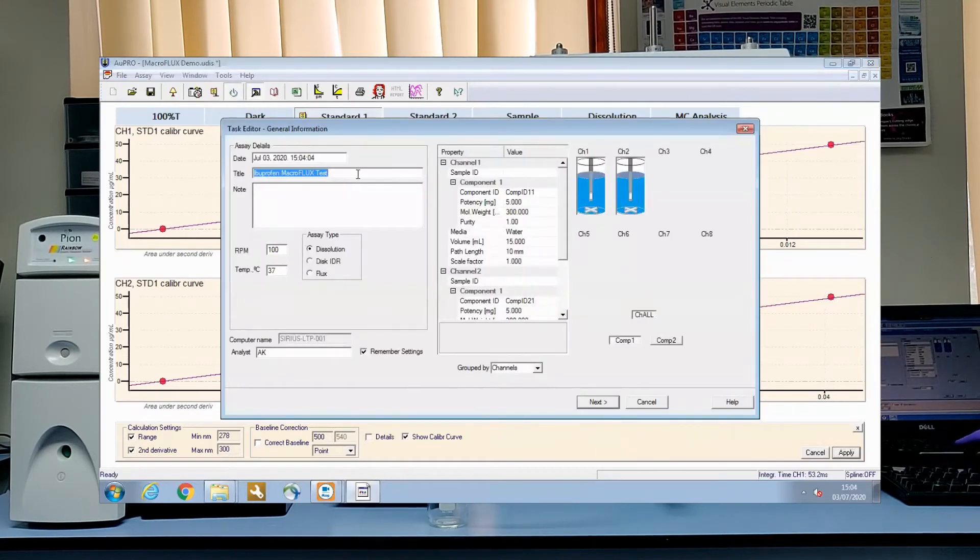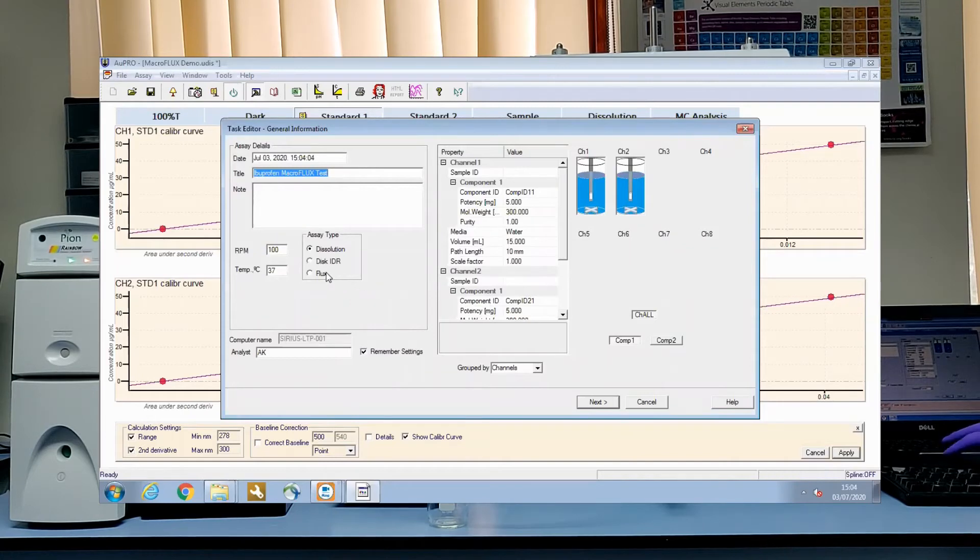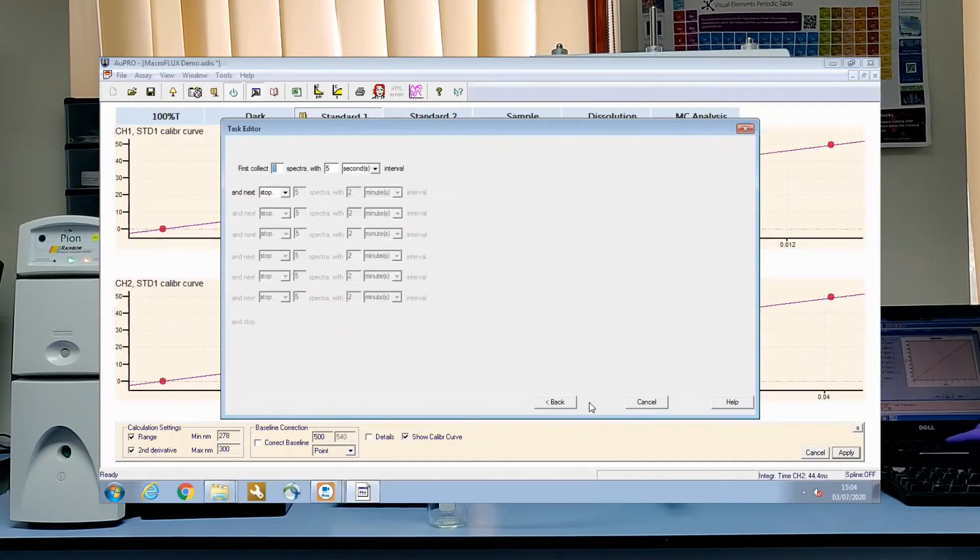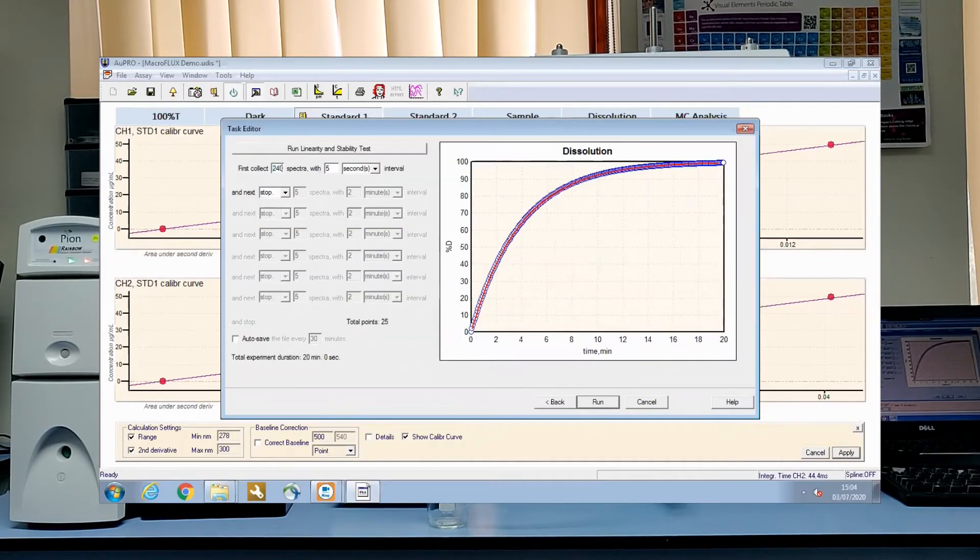To start the experiment, the experimental settings and spectral collection details are set up. During this example, 240 spectra are set to be collected with a 30 second interval, giving a total experimental duration of 2 hours.